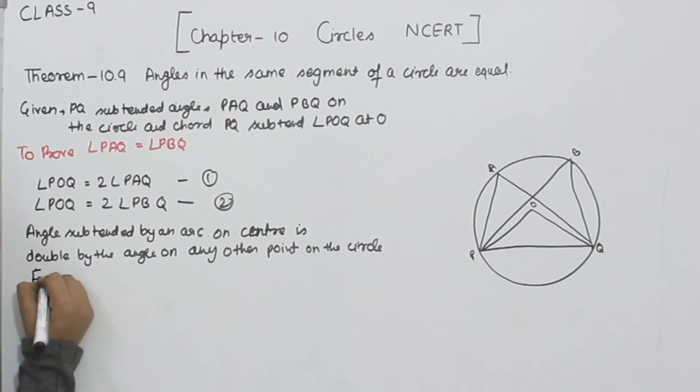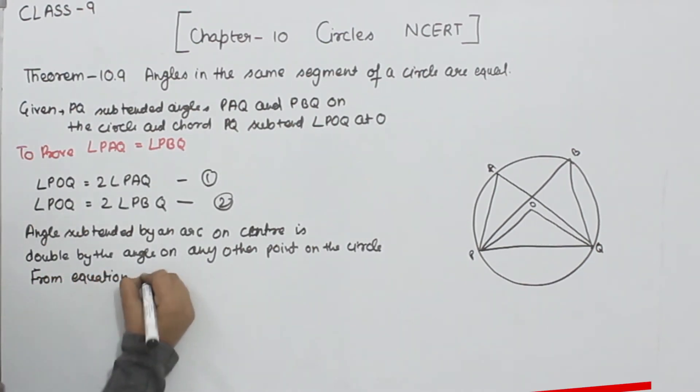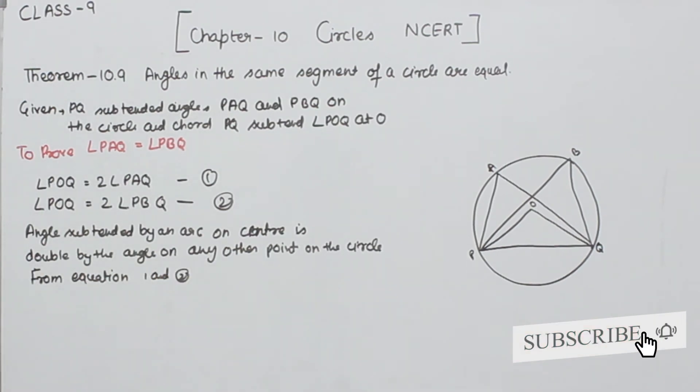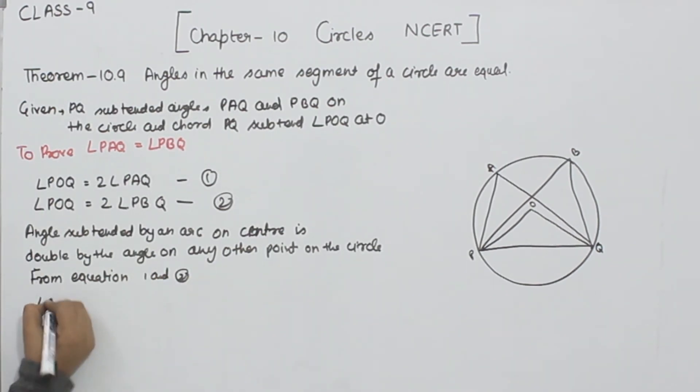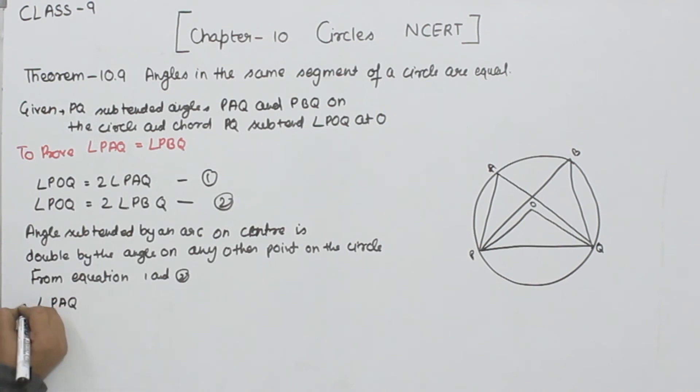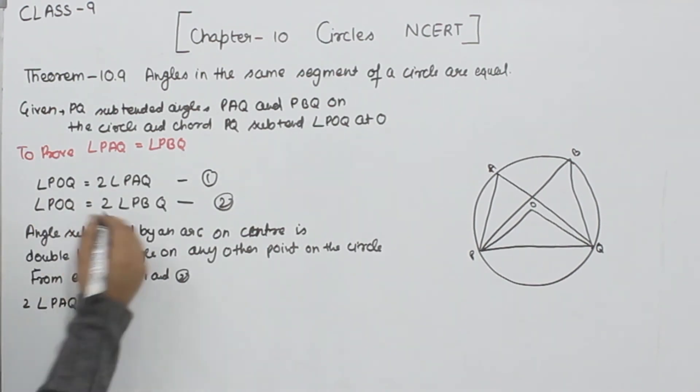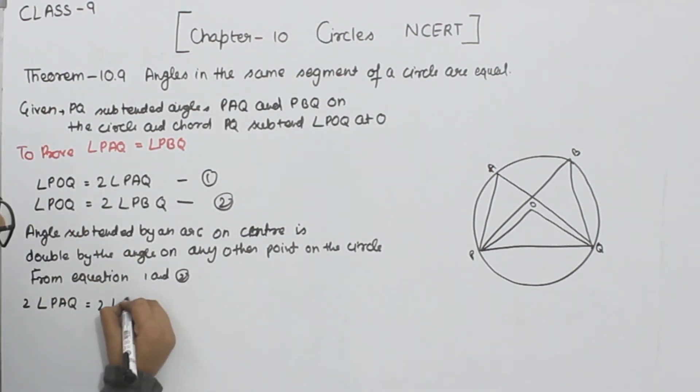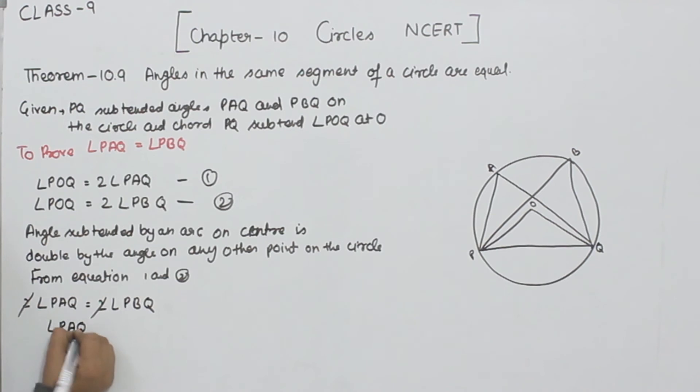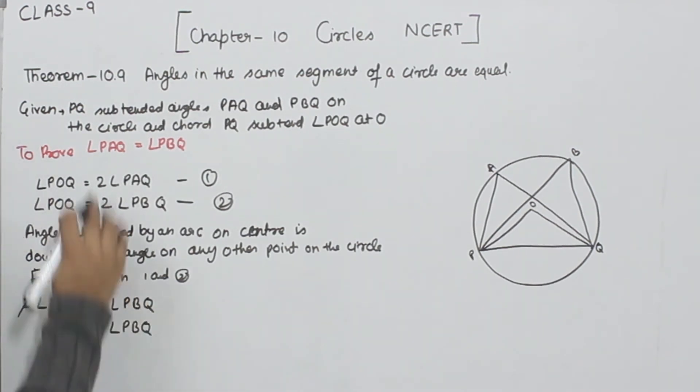So from equation number 1 and 2, we are going to write here. 2 times angle PAQ is equal to 2 times angle PBQ. 2 is cancelled from 2. So angle PAQ is equal to angle PBQ.